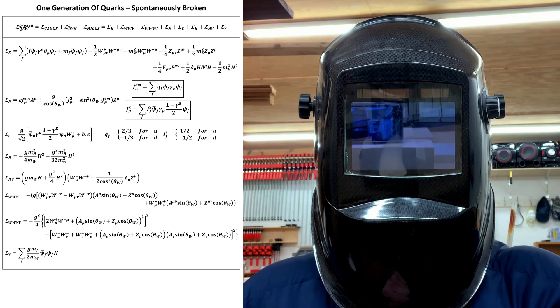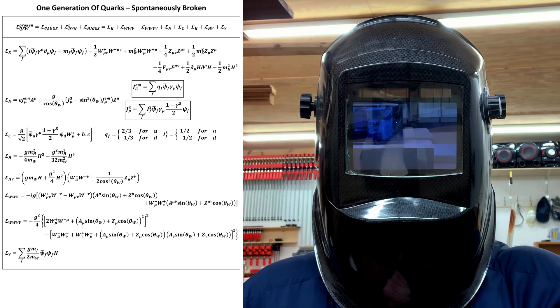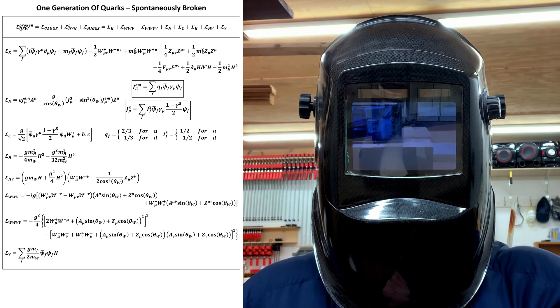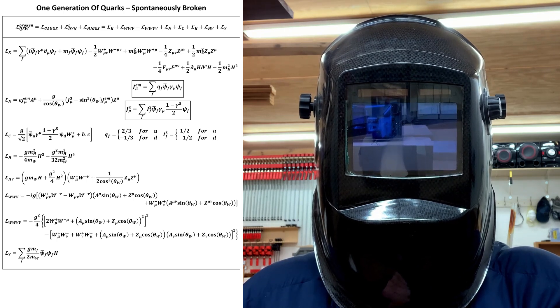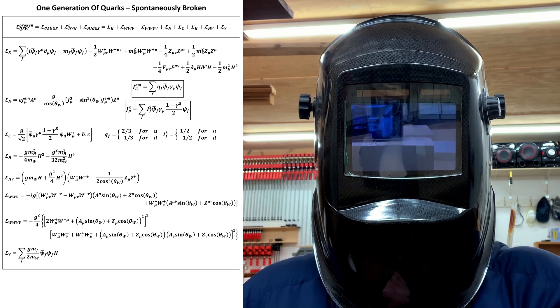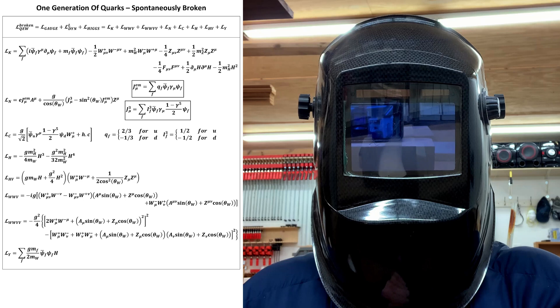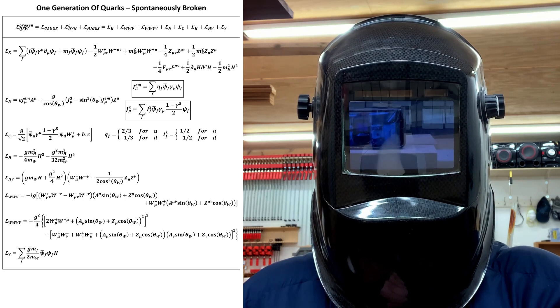Getting the complete three generation QEW theory isn't quite as simple as it was for the leptons, because we also have to include quark mixing. The first step is, however, the same. All we have to do to at least introduce the rest of the quarks into the theory is extend the fermion sums to include the two heavier generations, given that the additional ones interact in the same way as the existing ones.